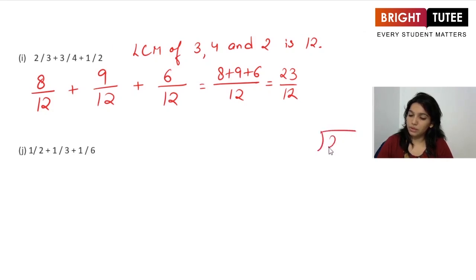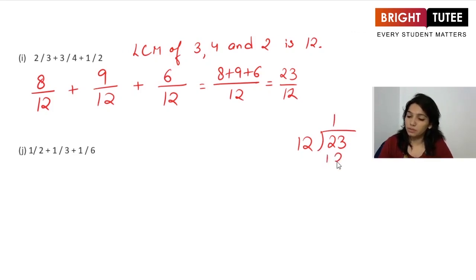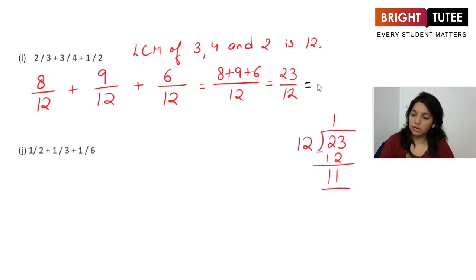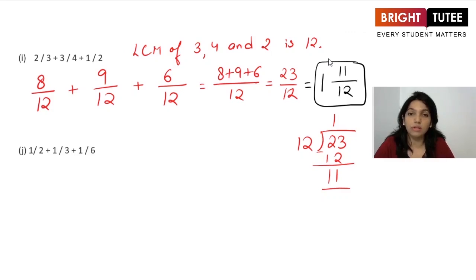Converting 23/12 to a mixed fraction: 12 goes into 23 just once, since 12 times 2 is 24 which is bigger than 23. The remainder is 23 minus 12 equals 11. So the final answer is 1 and 11/12.